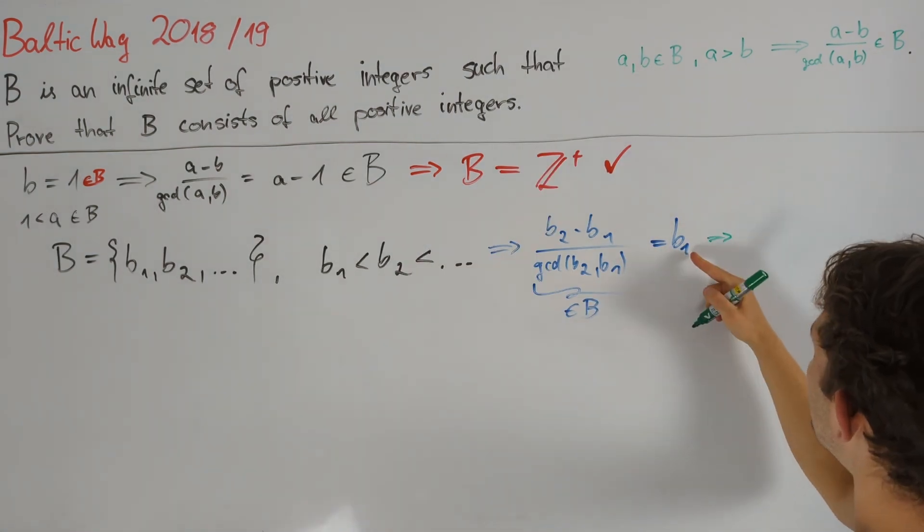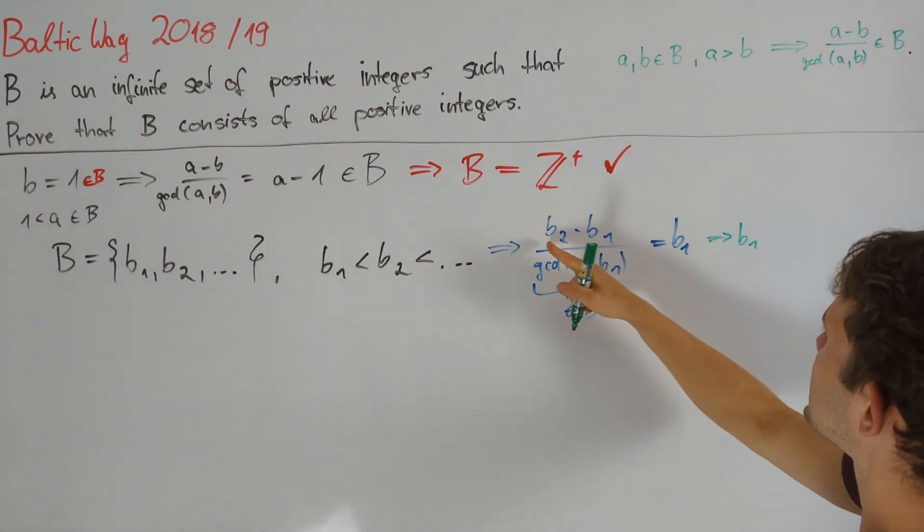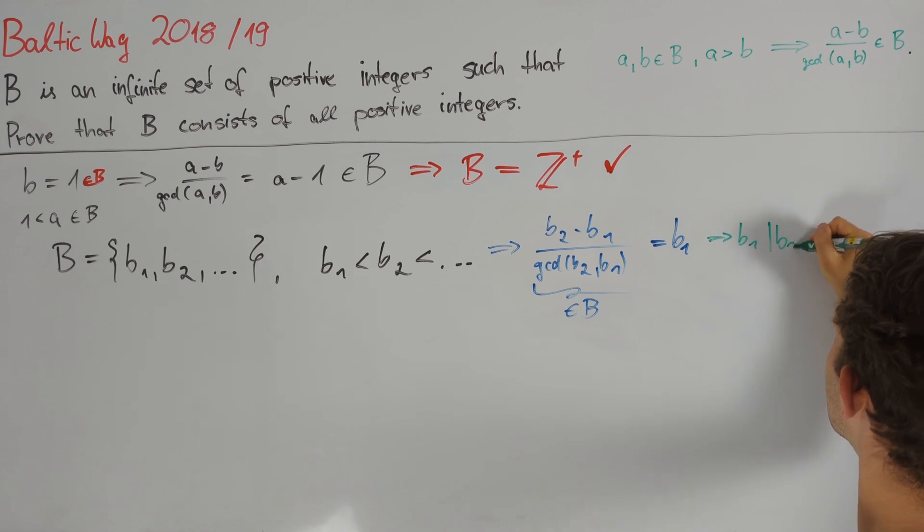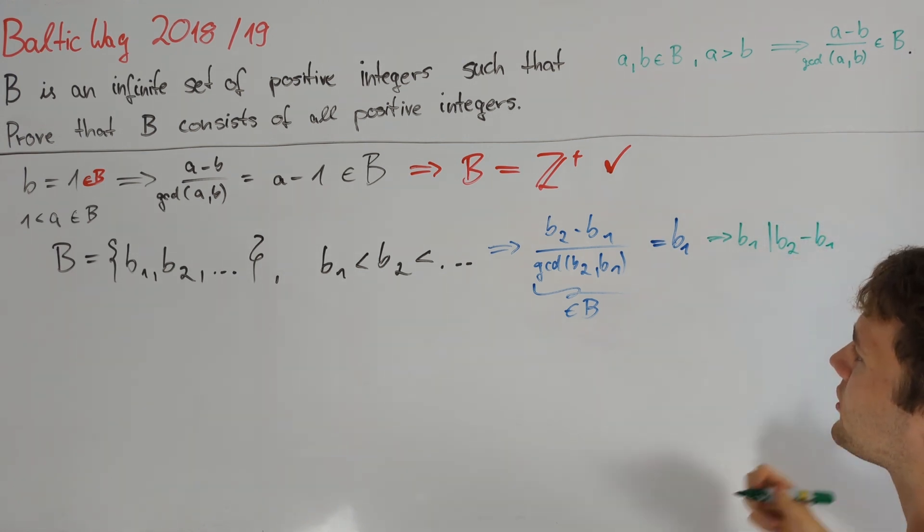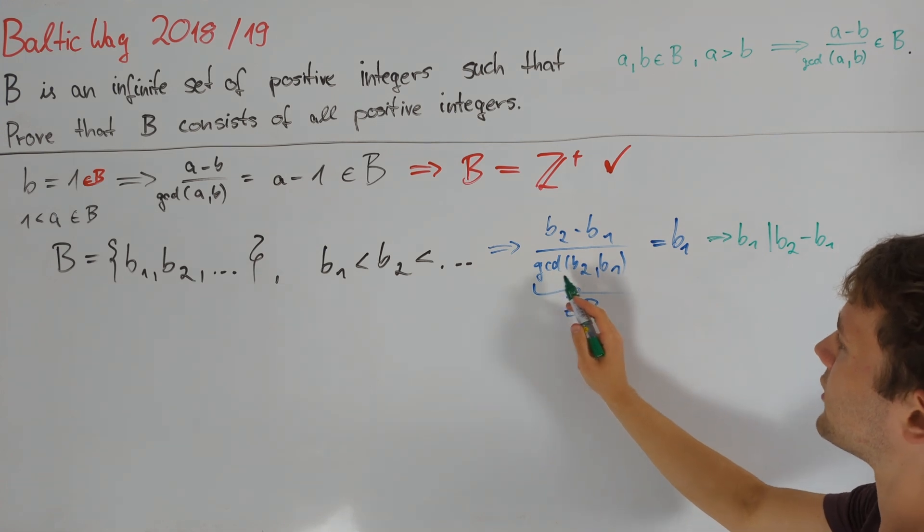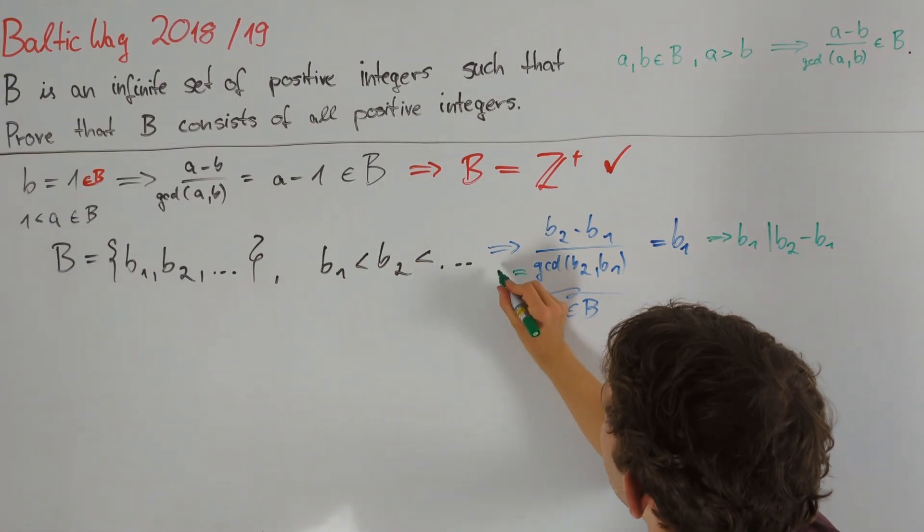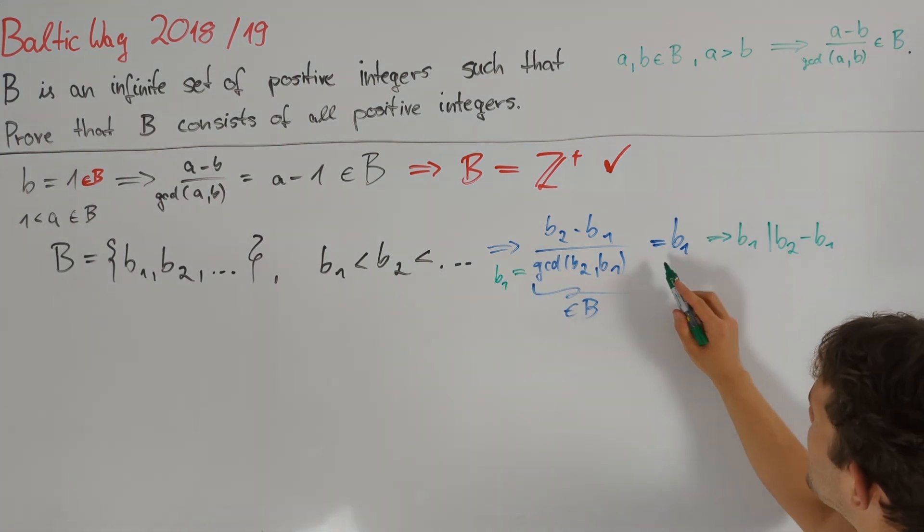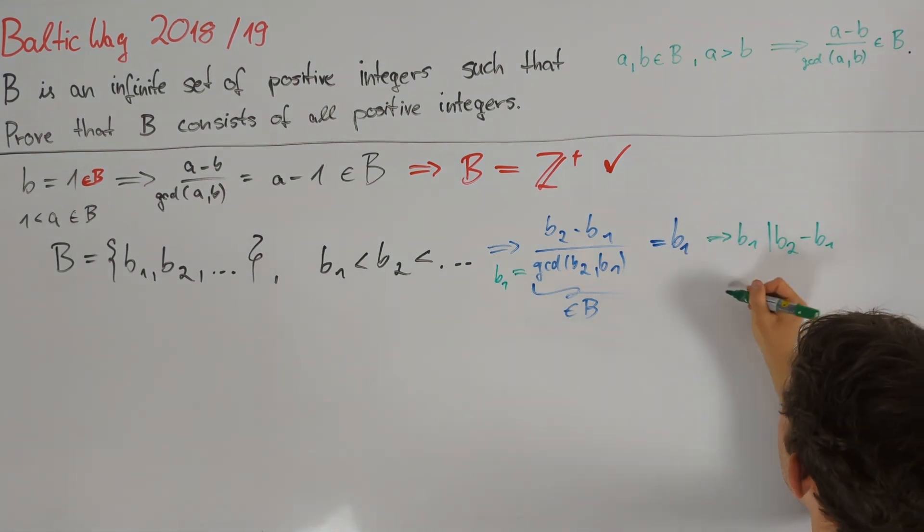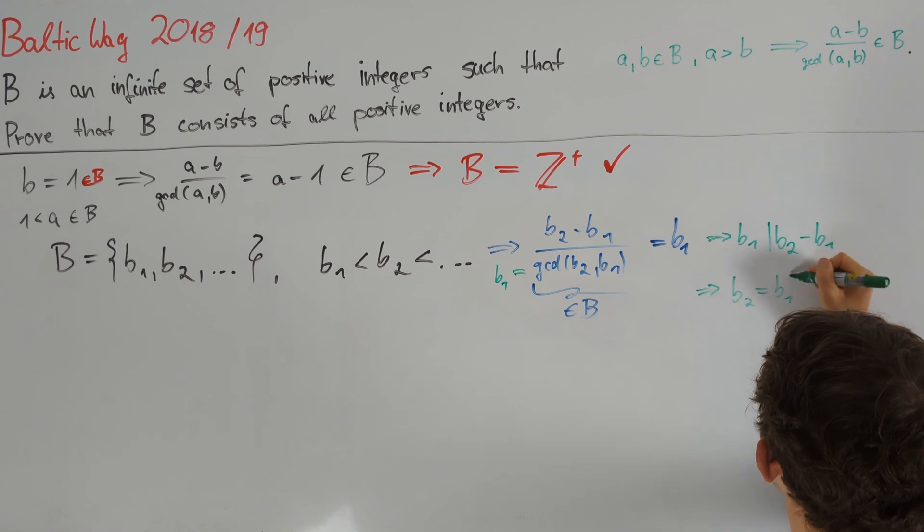This means that b1 is a divisor of b2 minus b1, and hence it also divides just b2. And in conclusion, we know that the greatest common divisor of b2 and b1 itself is nothing but b1. We can rearrange this equality to conclude that b2 equals b1 squared plus b1.